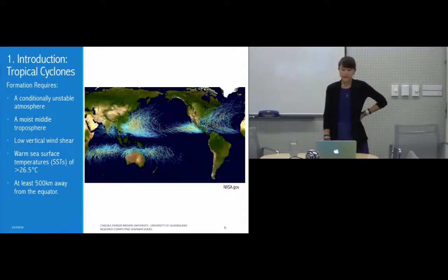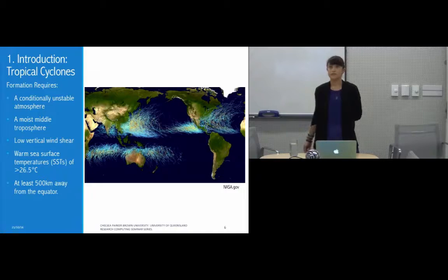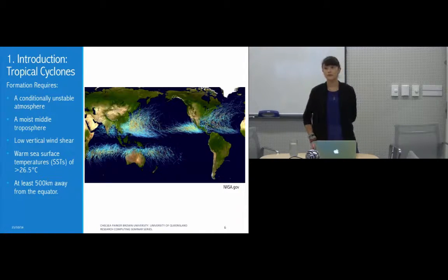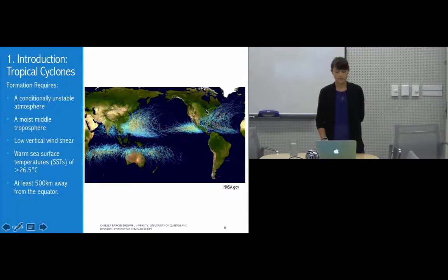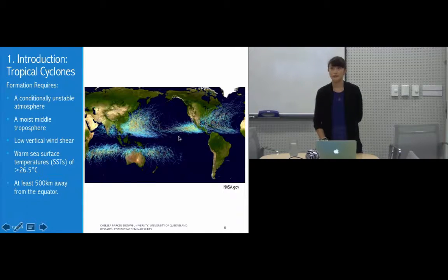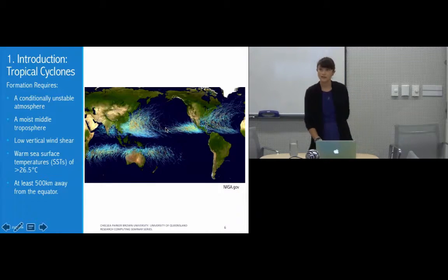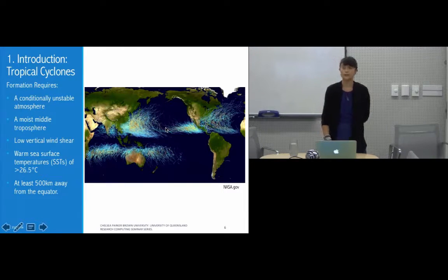Here are the global locations where those conditions exist and where tropical cyclones occur. We're looking at a composite of all tropical cyclones recorded over a 20-year period globally. The lines represent trajectories, with colors representing intensity: blue colors are weaker systems, and yellow to red are stronger cyclones.